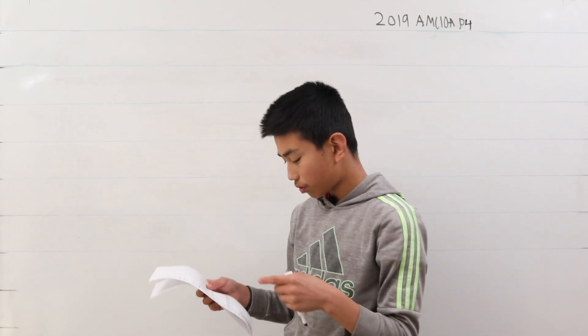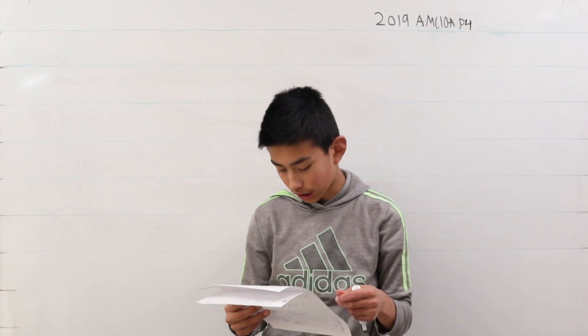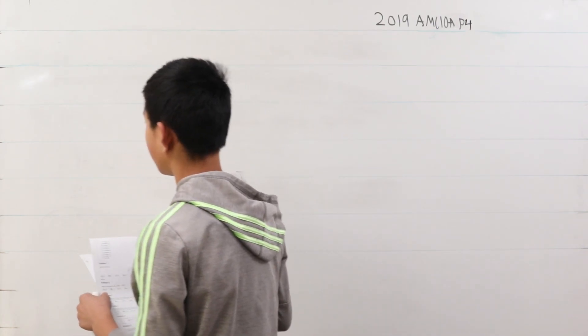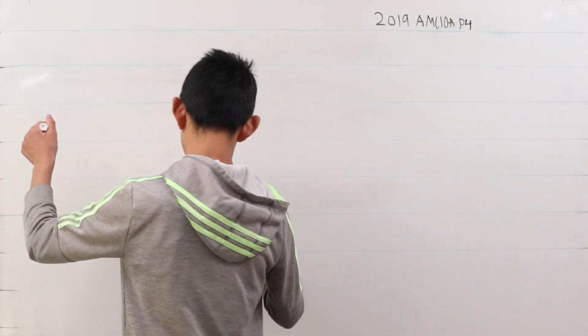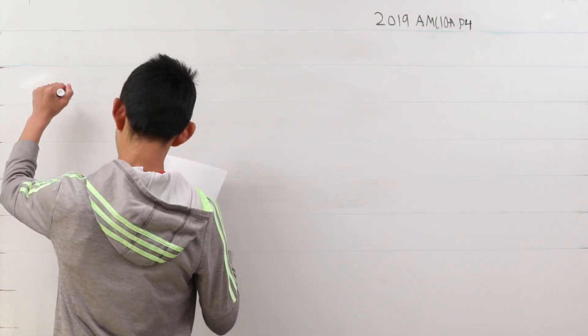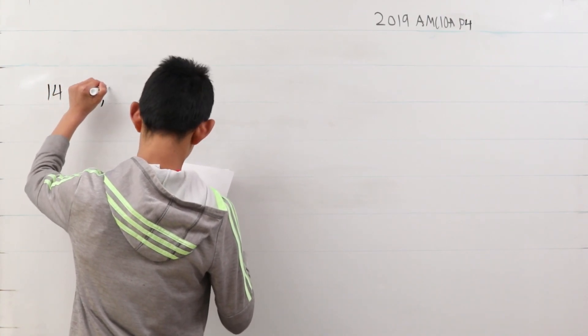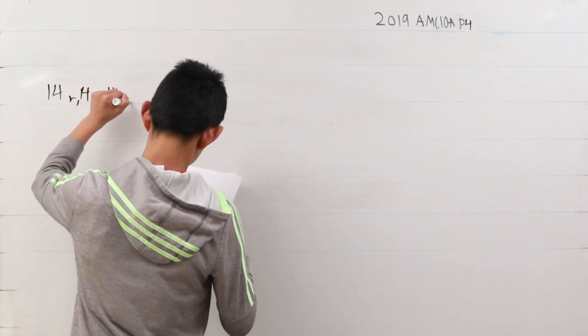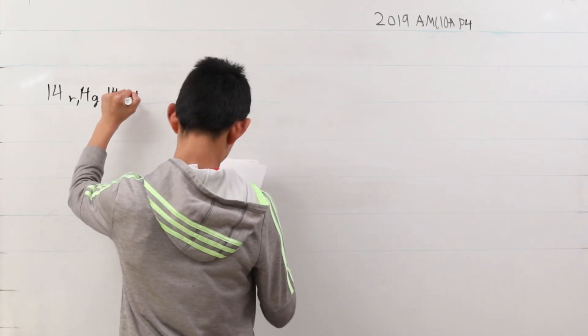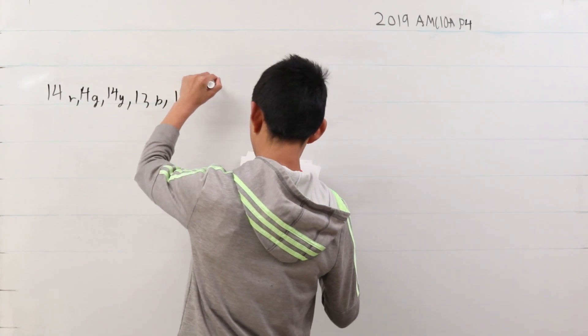We want at least 15 balls of a single color to be drawn. That means we could hypothetically draw 14 red, 14 green, 14 yellow, and then 13 blue, 11 white, and 9 black.